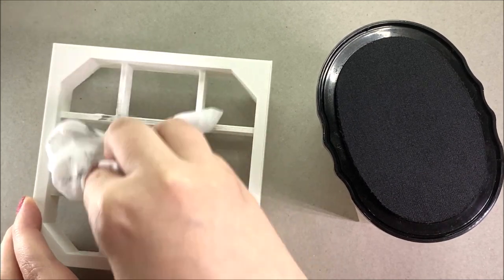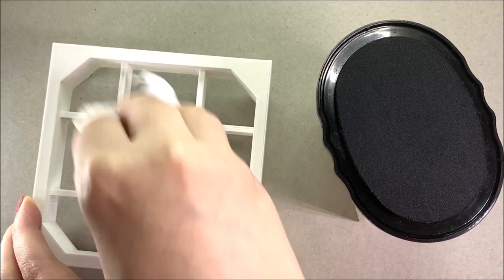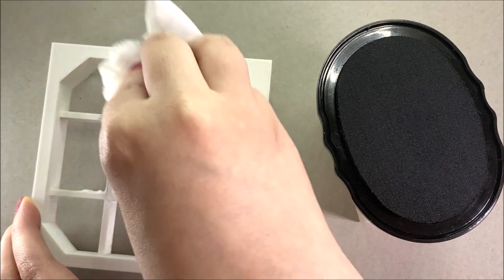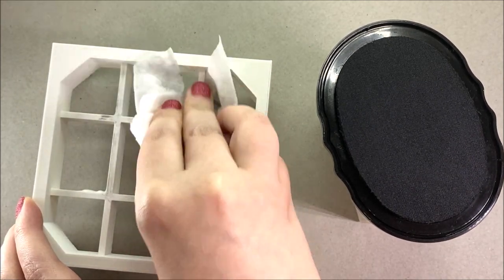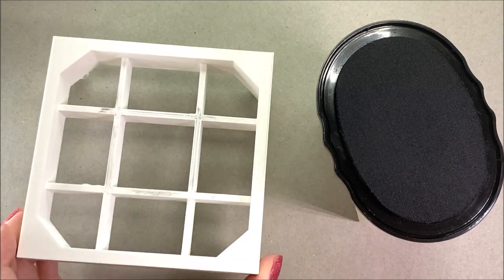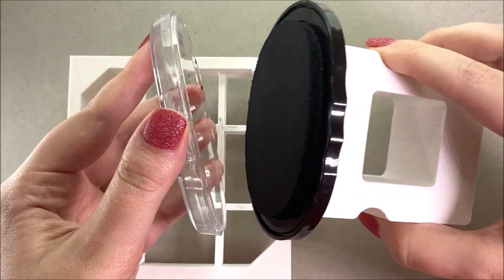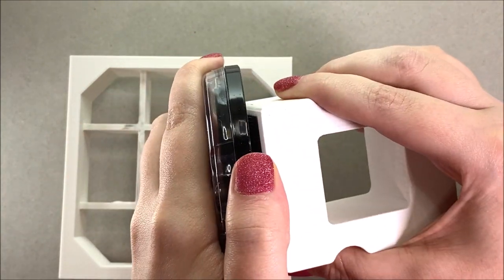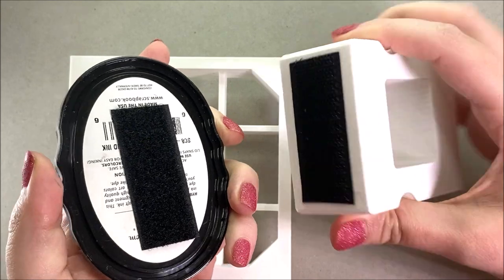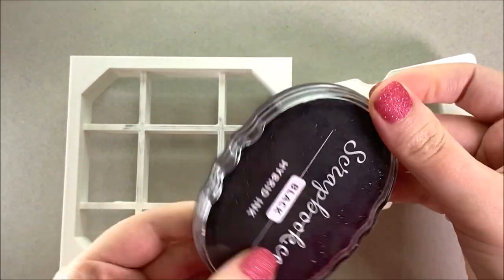The ink docking station wipes clean very easily with a damp cloth or with a baby wipe. If you have some stubborn ink, you can always use ink cleaner or an alcohol spray as well. So you can see once that's clean, I can change ink pads and go to a different color or different ink without contaminating the previous one. So when you're finished, just pop on the lid and pull the ink away from the tool and you're good to go.